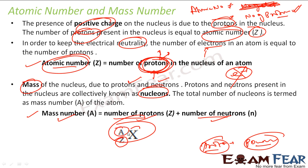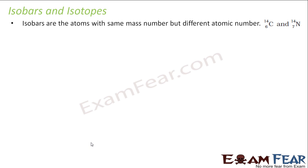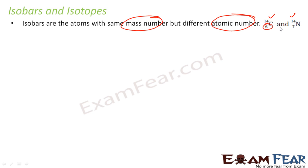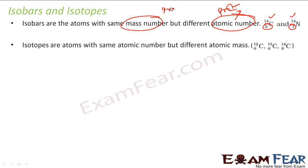Isobars are species with the same mass number but different atomic numbers. If you see, atomic mass is the same but atomic number is different. And if atomic number is different, that means they have different properties — because atomic number is the proton count, proton decides property. You can remember it as: proton decides property.